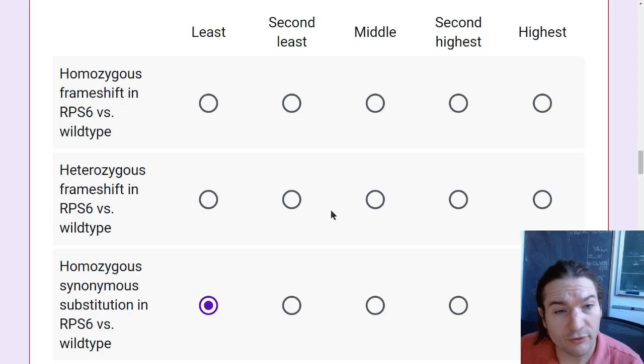A heterozygous frameshift mutation, pretty bad. That means that, if it's again protein coding, at least half of our transcripts aren't going to work, or at least that's the most likely outcome from a heterozygous frameshift. So that's going to effectively drop the dosage of RPS6 within the cell by half, and that can be a problem.